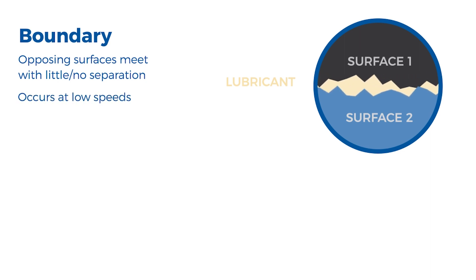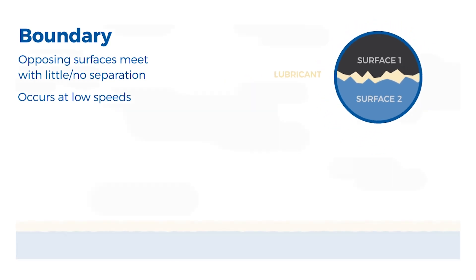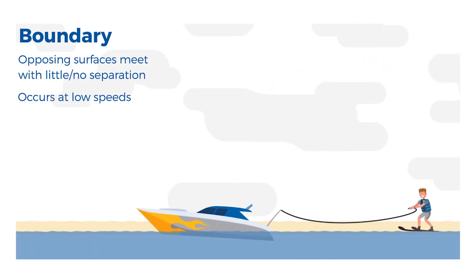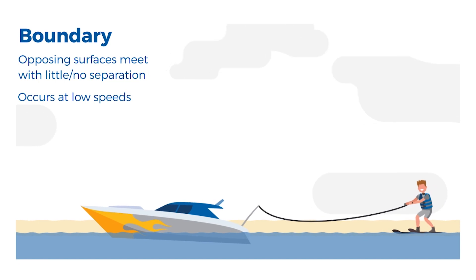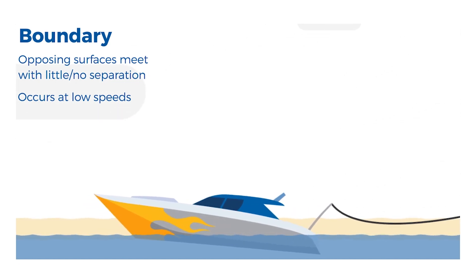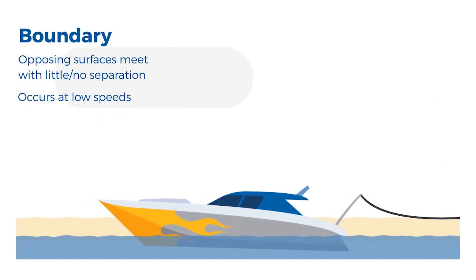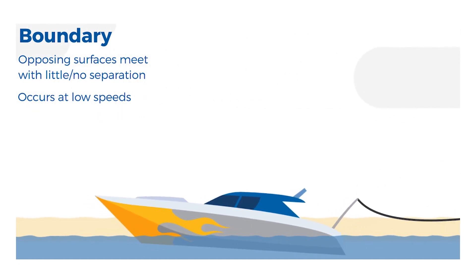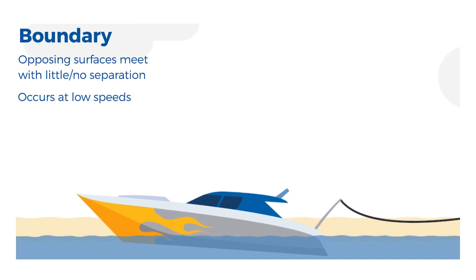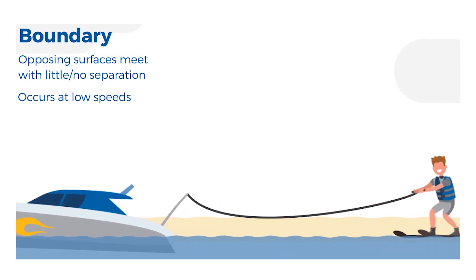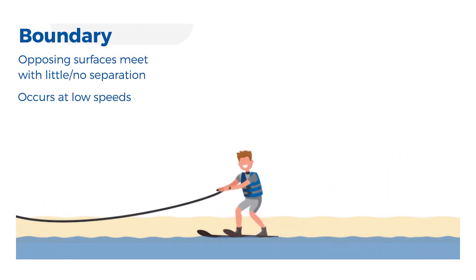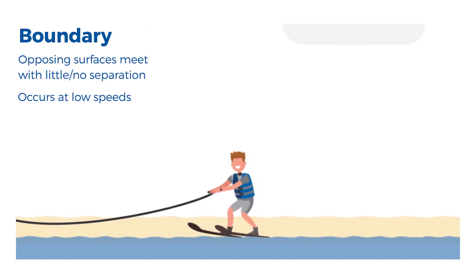Let's explain using the example of water skiing. Imagine you were driving a speedboat. If you gave the boat just a little bit of throttle, the nose of the boat would go up and the back of the boat would be angled in the water. When half of the boat is still in the water, it creates drag. The same thing would happen on water skis when you're first trying to get up and going in the water. This is a great example of boundary lubrication.